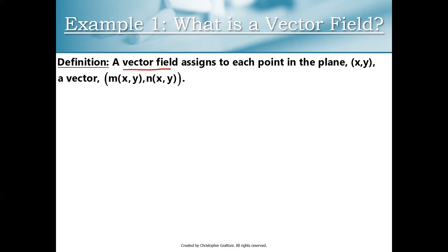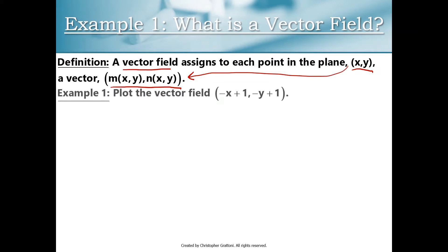We have a pair of equations m of xy, n of xy, and if you plug in your current position x comma y into these equations it'll spit out a vector associated with your current position in space. Let's come up with an example: the vector field negative x plus 1 comma negative y plus 1, and those equations represent an assignment of one vector to each point in the plane.